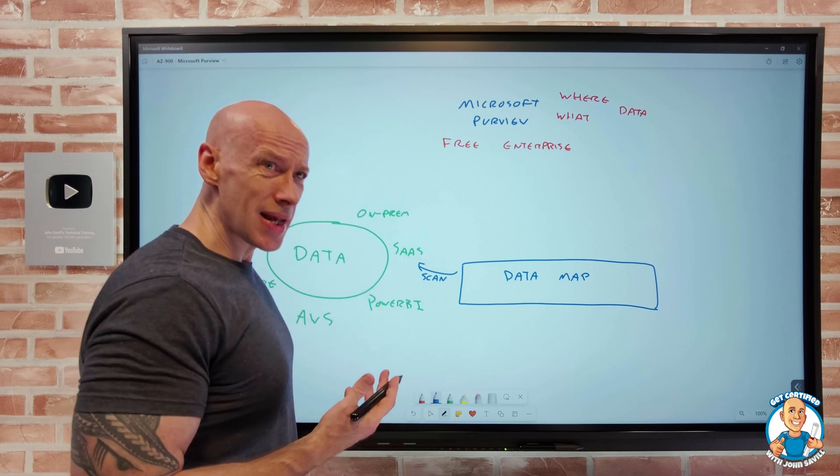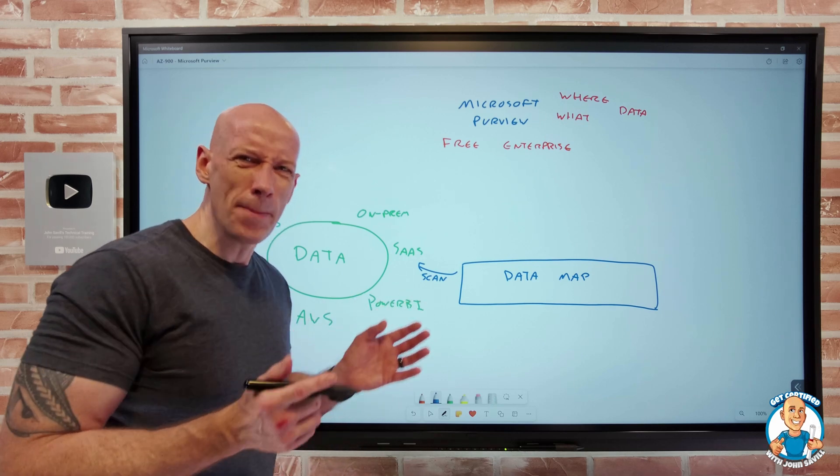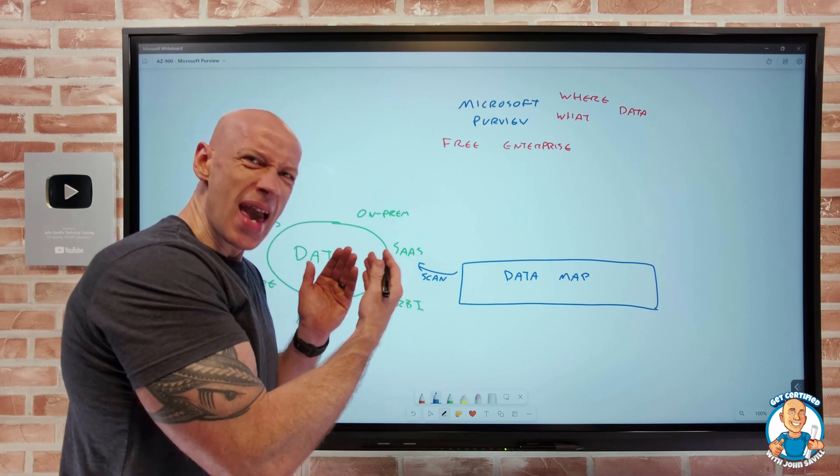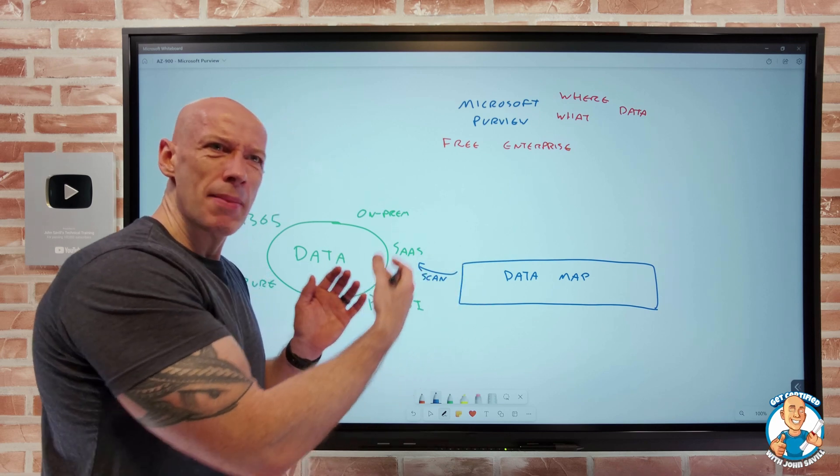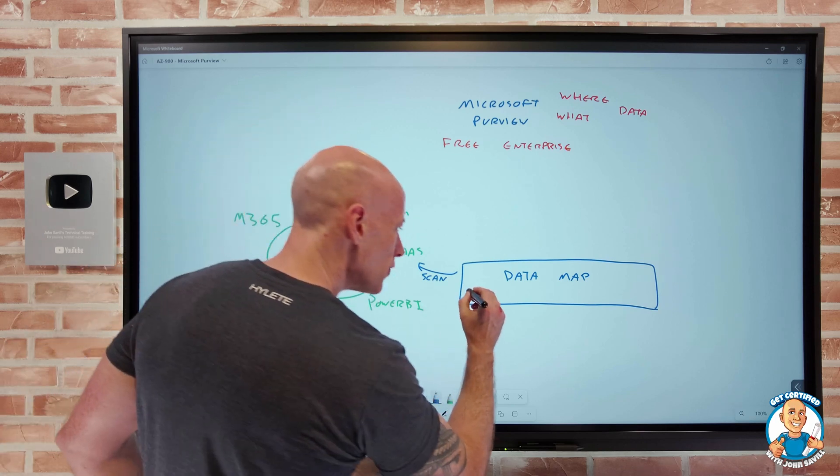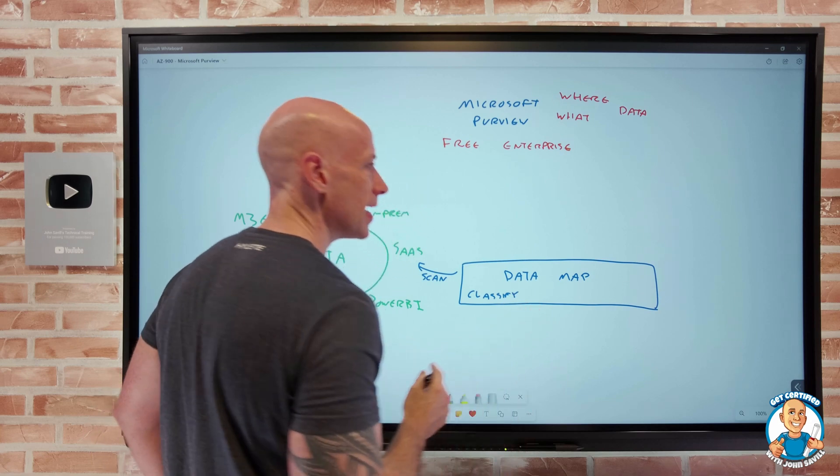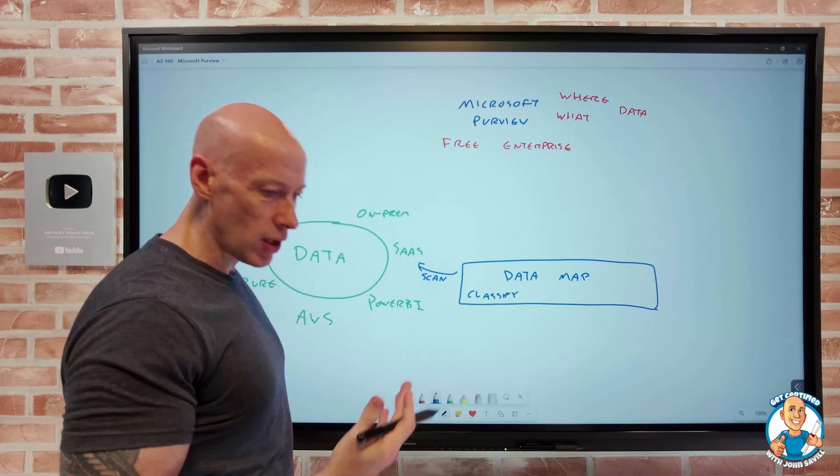And so the first thing we often want to do is classify the data. And there's 200 plus built-in classifications. I can create custom classifications which are built on patterns, N number of numerics and then maybe a slash and then an alpha. I could detect a social security number or a credit card. So the first thing we want to do is classify the data, so we know this data has social security numbers, this has credit cards, whatever that might be.